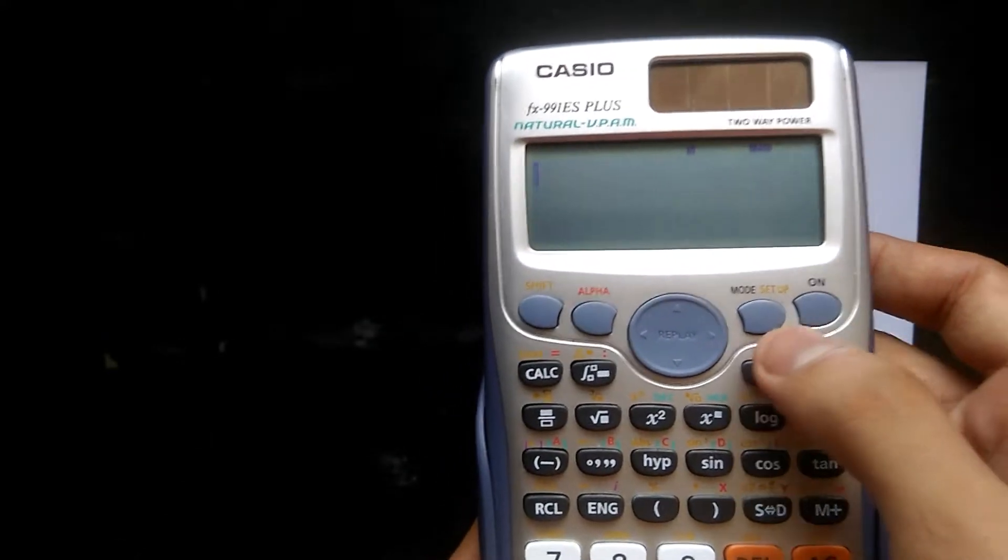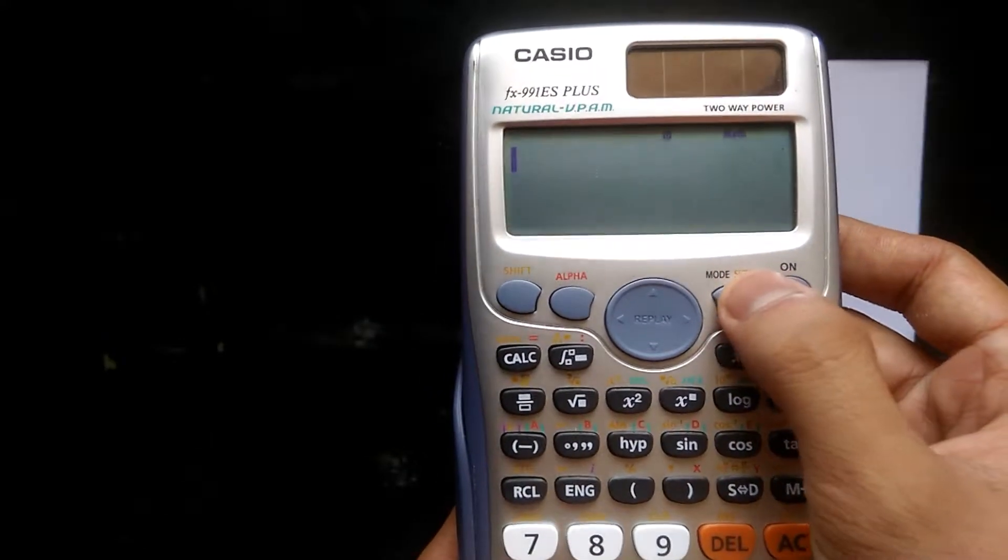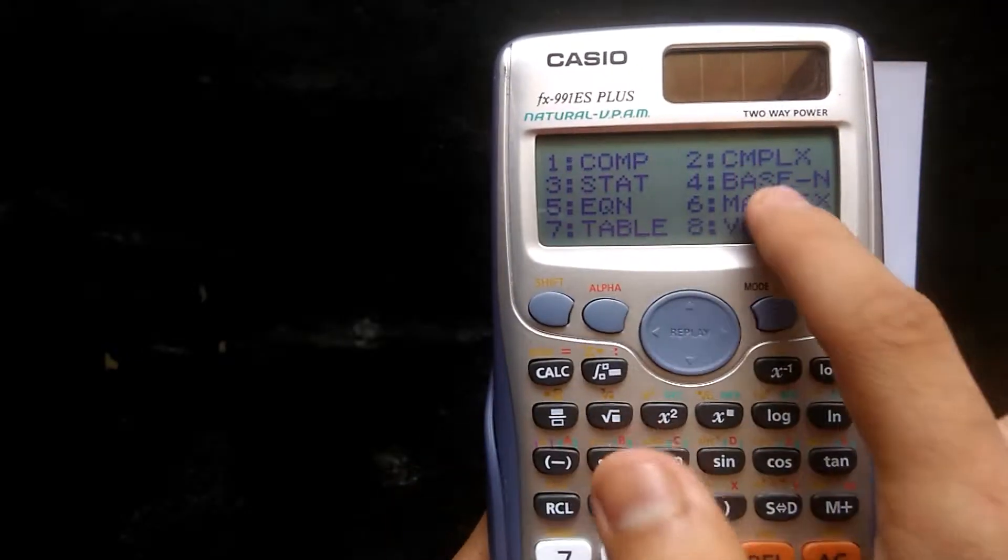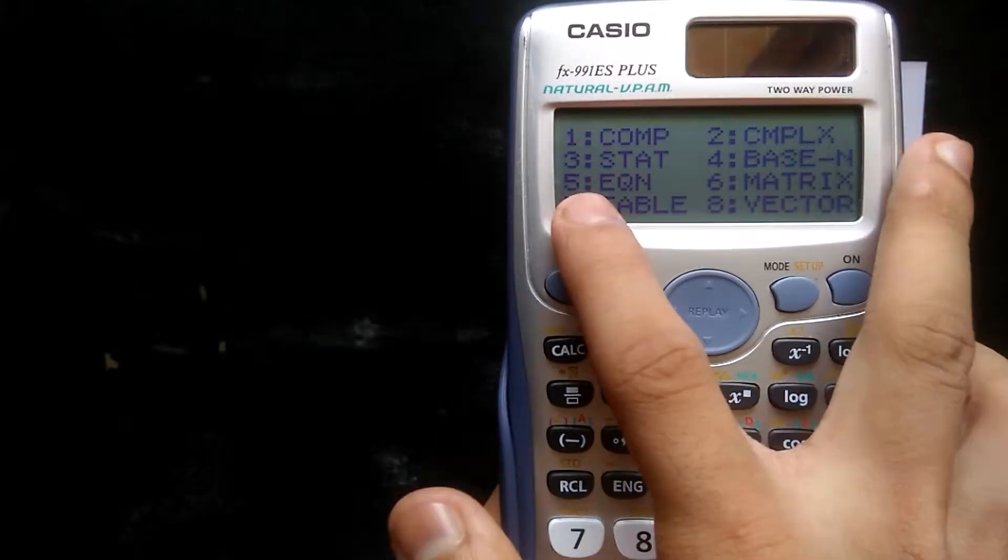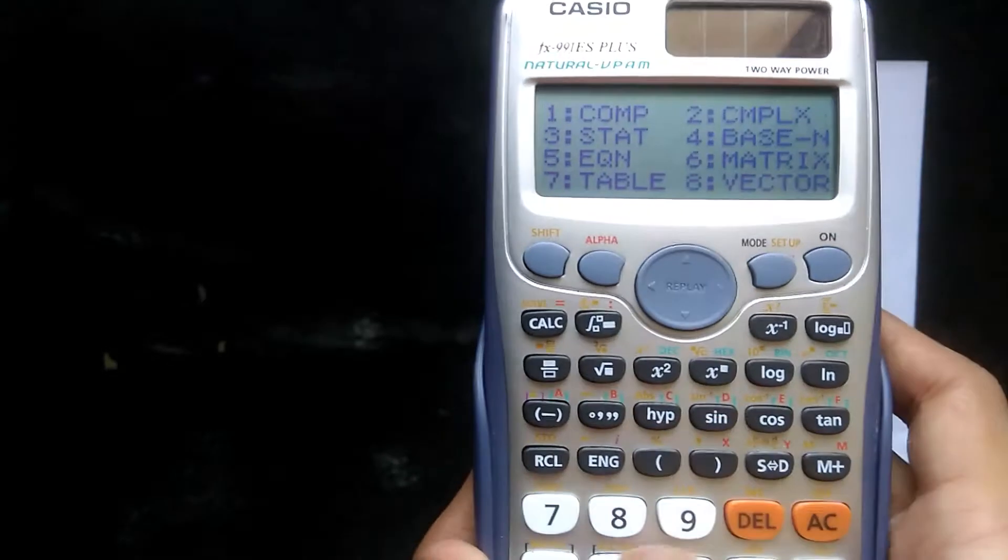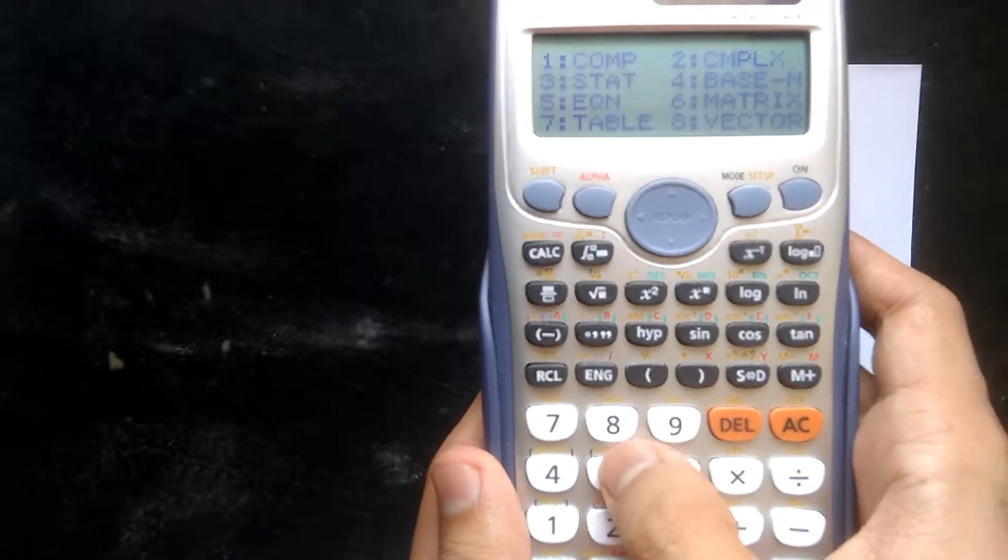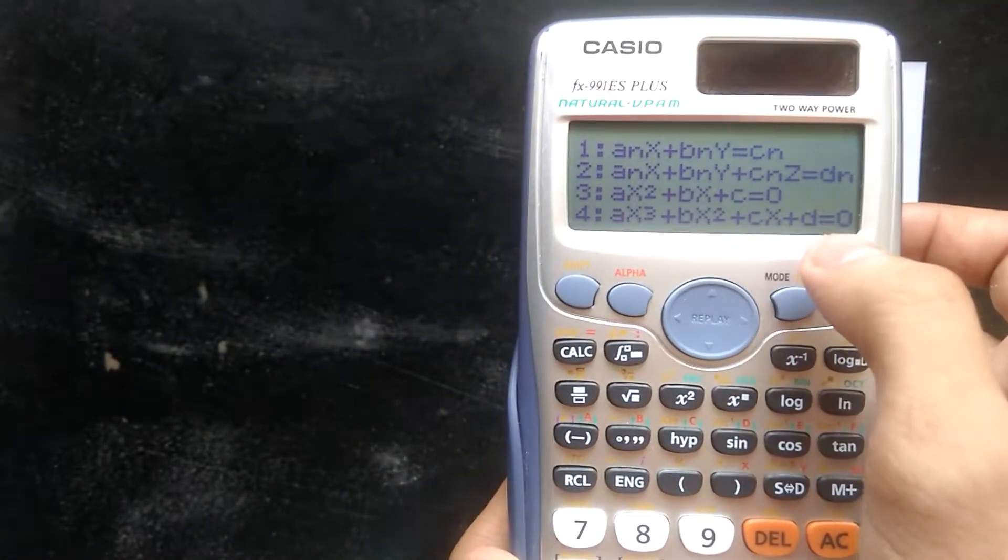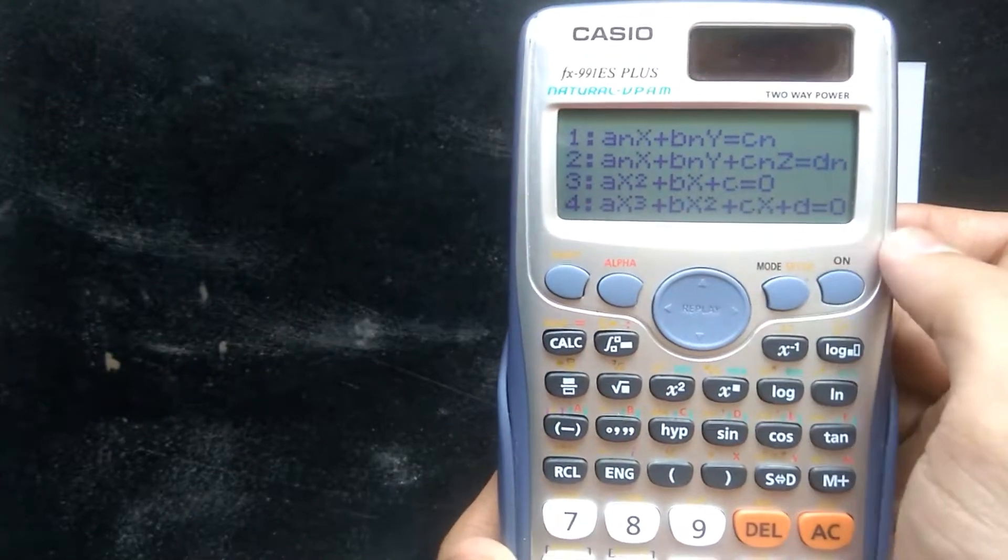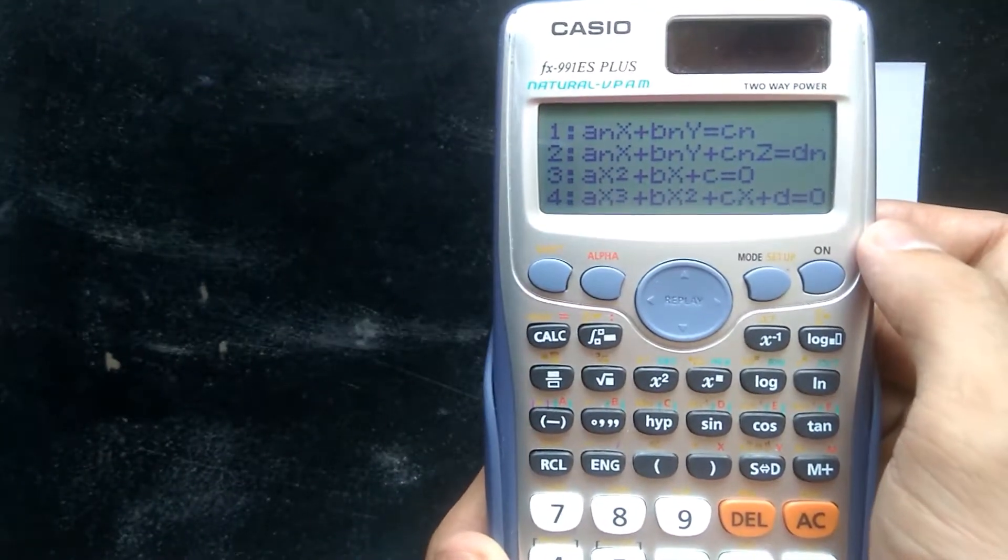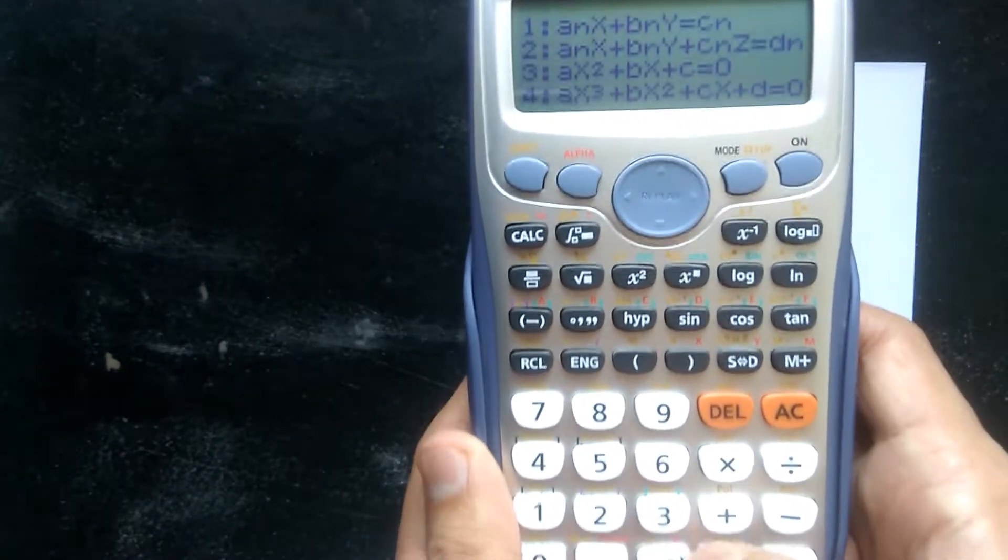Turn it on by this button, then change the mode by using this button. We can see these options. At number five, we have the equation option, so press five. We will see four types of equations. Quadratic equation is at number three, so press number three.